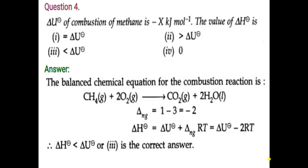Question number 4: ΔU° of combustion of methane is minus x kJ per mole. The value of ΔH° is — you have to choose one option. For these kinds of questions, first you have to write the chemical equation. Combustion of methane is methane plus oxygen, giving carbon dioxide and water. Then you have to balance it. Then we use the formula: ΔH° = ΔU° + ΔNgRT.